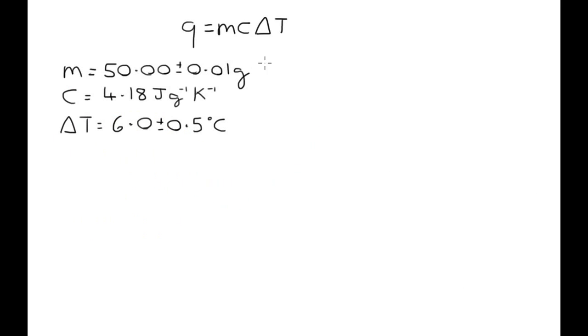Okay, so now we're going to try calculating the total uncertainty for this calculation here. We're going to use Q equals MC delta T and for M I'm going to have 50.00 plus or minus 0.01 grams.